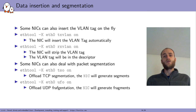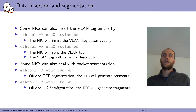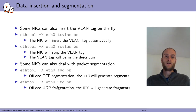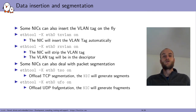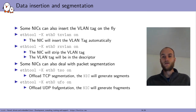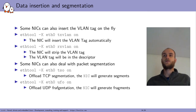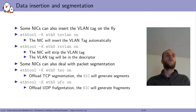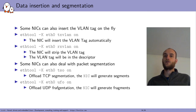Some NICs also perform packet segmentation offloading. When you want to send a very large packet that needs to be cut into several pieces — with TCP, big TCP, or UDP — the NIC automatically cuts the packet into segments and fills in the headers with correct values, including incrementing any per-frame fields.